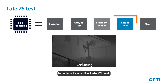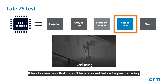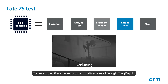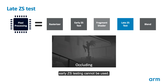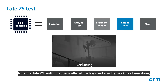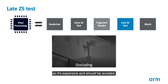Now let's look at the late ZS test. It handles any work that couldn't be processed before fragment shading. For example, if a shader programmatically modifies gl_FragDepth, early ZS testing cannot be used. Note that late ZS testing happens after all the fragment shading work has been done, so it's expensive and should be avoided.